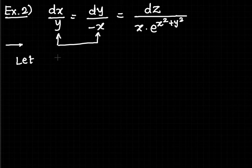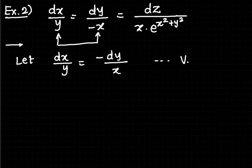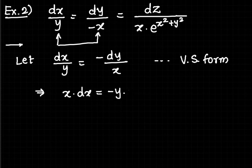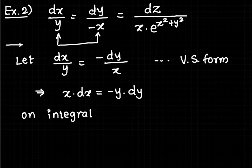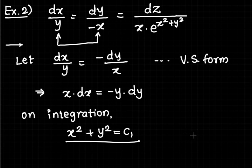Equating the first two ratios, dx/y = dy/(−x) is already in variable separable form since it contains two variables. We rewrite it as x dx = −y dy. On integration of both sides, we get x²/2 + y²/2 = c₁*, giving x² + y² = c₁, which we call equation number 1.